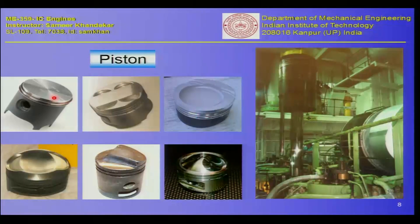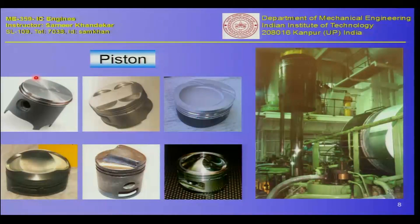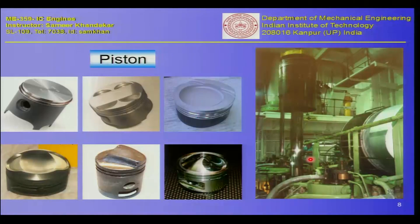The piston undergoes cyclic changes in pressure and temperature because the piston head directly forms the bottom part of the combustion chamber, witnessing combustion directly. On the sides is the cylinder liner; on top are the valves. Because enormous power can be generated — one cylinder in a large engine can generate nearly 2000 to 3000 BHP — the piston needs cooling. Water can flow inside the piston to cool it.